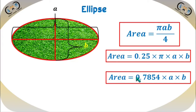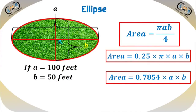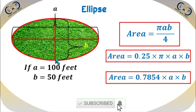In case of elliptical length measurement, we can use the formula: area equals pi AB divided by 4, or 0.25 times pi times A times B, or 0.7854 times A times B. The area will be in square units. For example, if length A is 100 feet and length B is 50 feet: